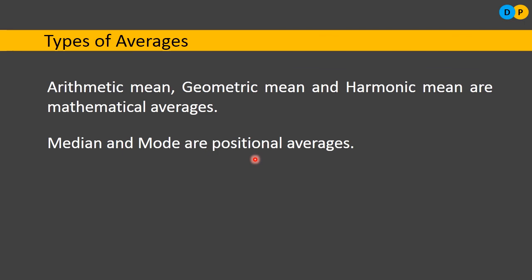In this video, we studied the different requisites or characteristics of univariate data, what is meant by the measure of central tendency, and the different types of averages. Thank you.